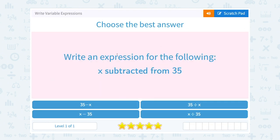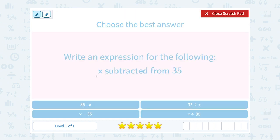Write an expression for the following, x subtracted from 35. We're going to make sure x is the thing being subtracted, right? We're starting out with 35, and then we're subtracting x. So notice this is not the same thing as saying x minus 35, right? That would be 35 subtracted from x.